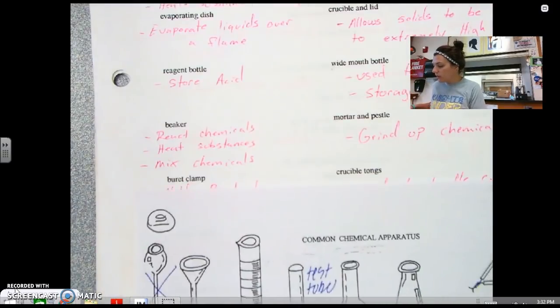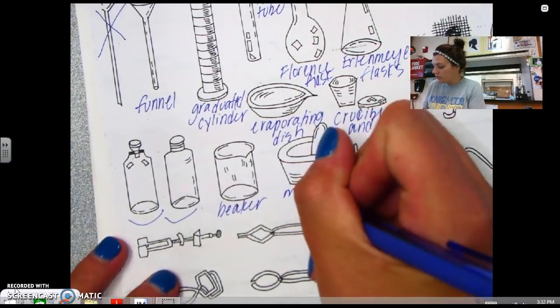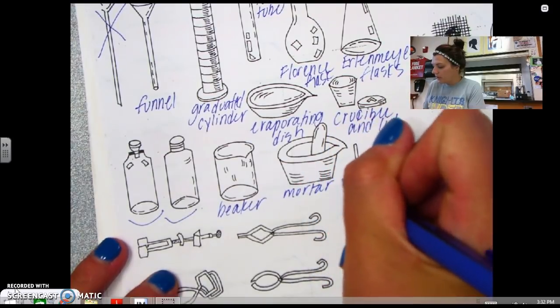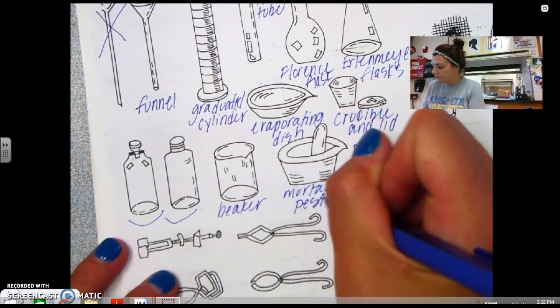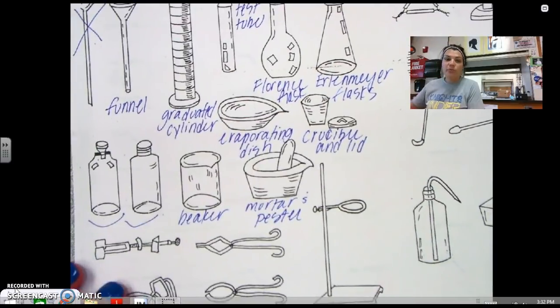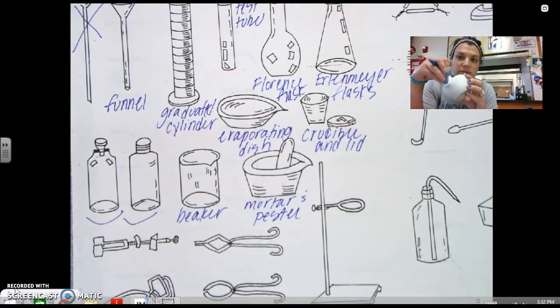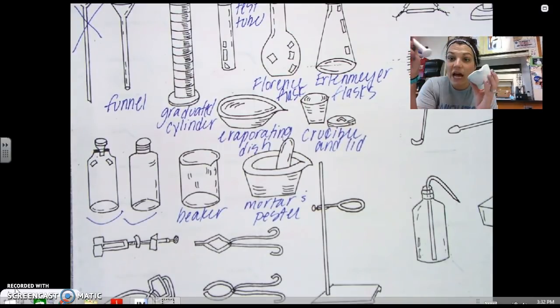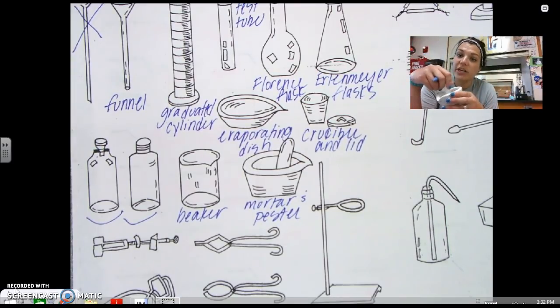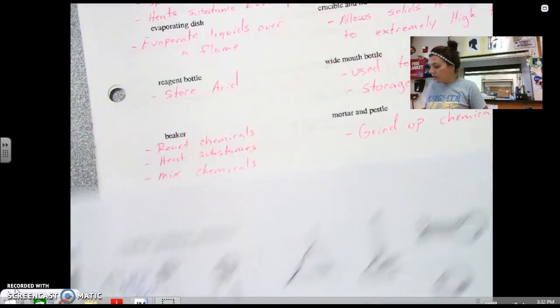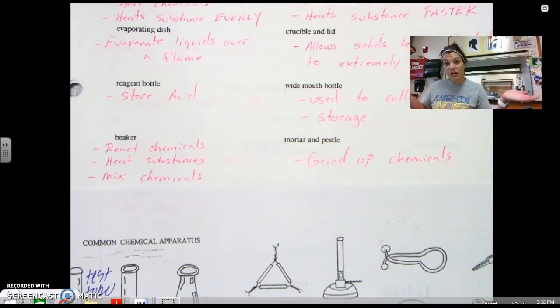The next one is a mortar and pestle. So this is a mortar and pestle. And you probably have seen these before, especially if you watch certain shows or certain movies. This is what we use if we have a solid and we need it in smaller pieces. We can put it here and crush down our solids so we can dissolve it into water. So a mortar and pestle obviously grinds up chemicals.